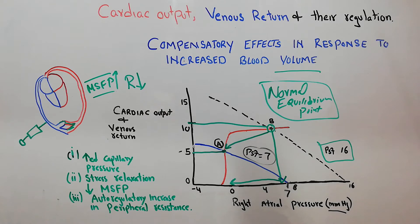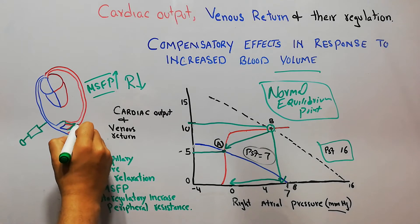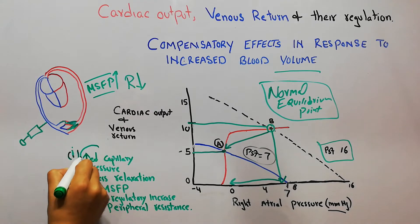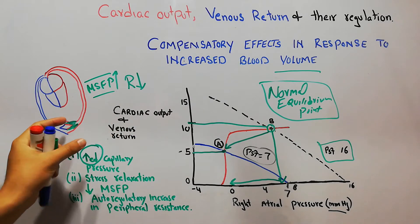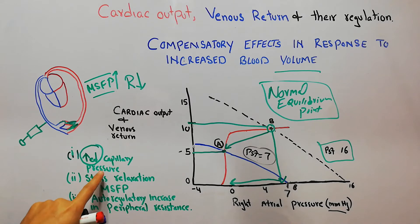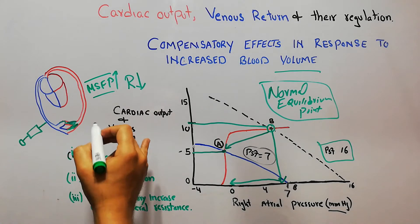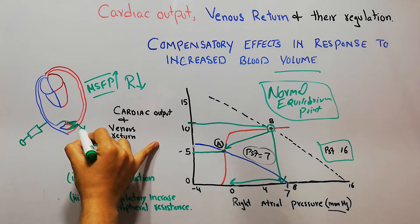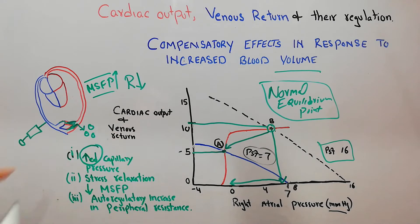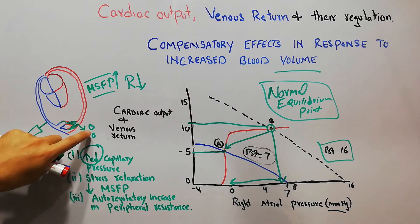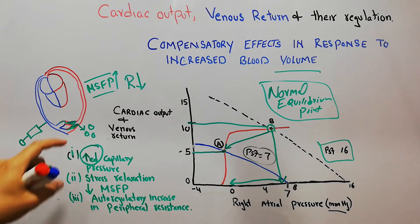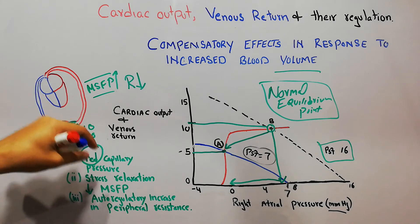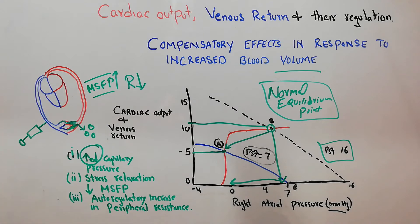The first compensatory effect is increased capillary pressure. With more filling of the vessels and more fluid, pressure in the blood vessels increases, ultimately leading to increased capillary pressure. Due to this increased capillary pressure, fluid starts moving out of the capillaries into the tissue, because fluid pressure is high inside the capillaries and low on the tissue side. This shifting of fluid out of the circulatory system into the tissues starts decreasing the mean systemic filling pressure.